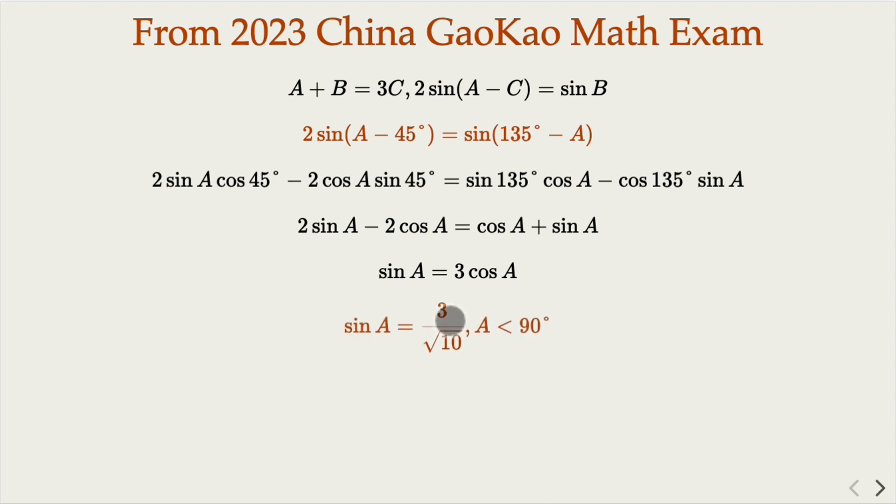So what is the value of sine A? That's straightforward. 3 over square root of 10. We also know that A is an acute angle here, less than 90 degrees.